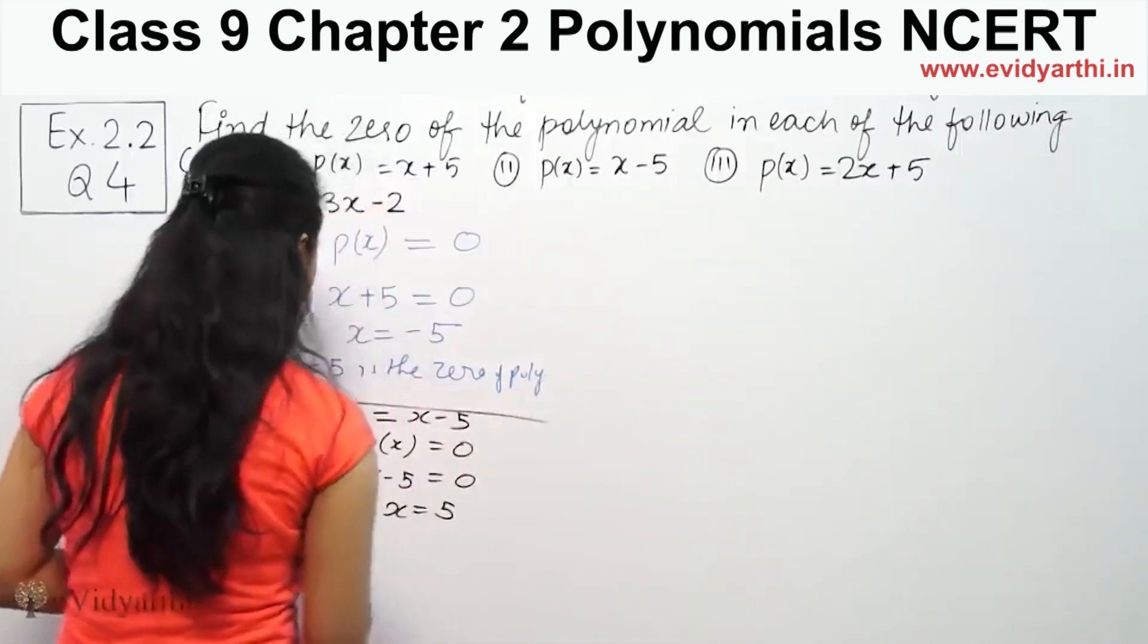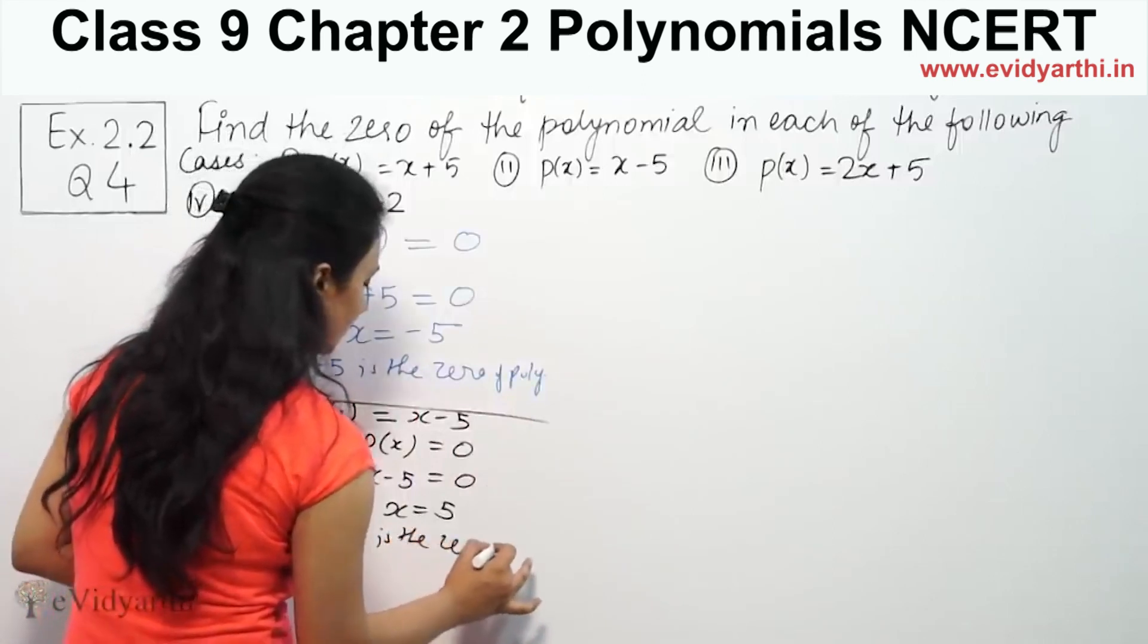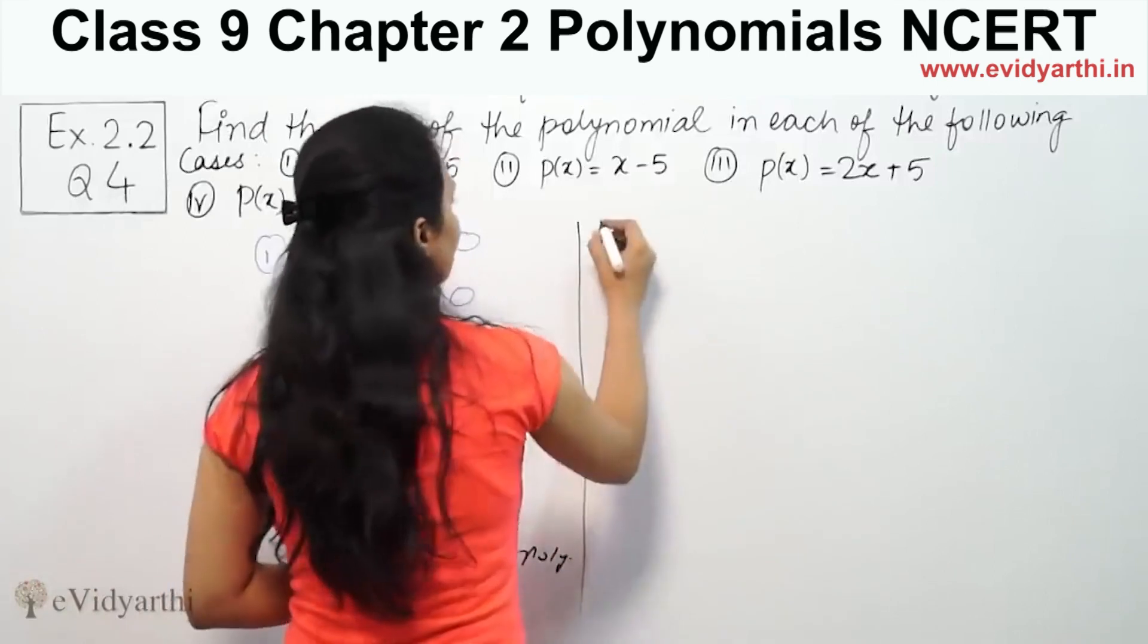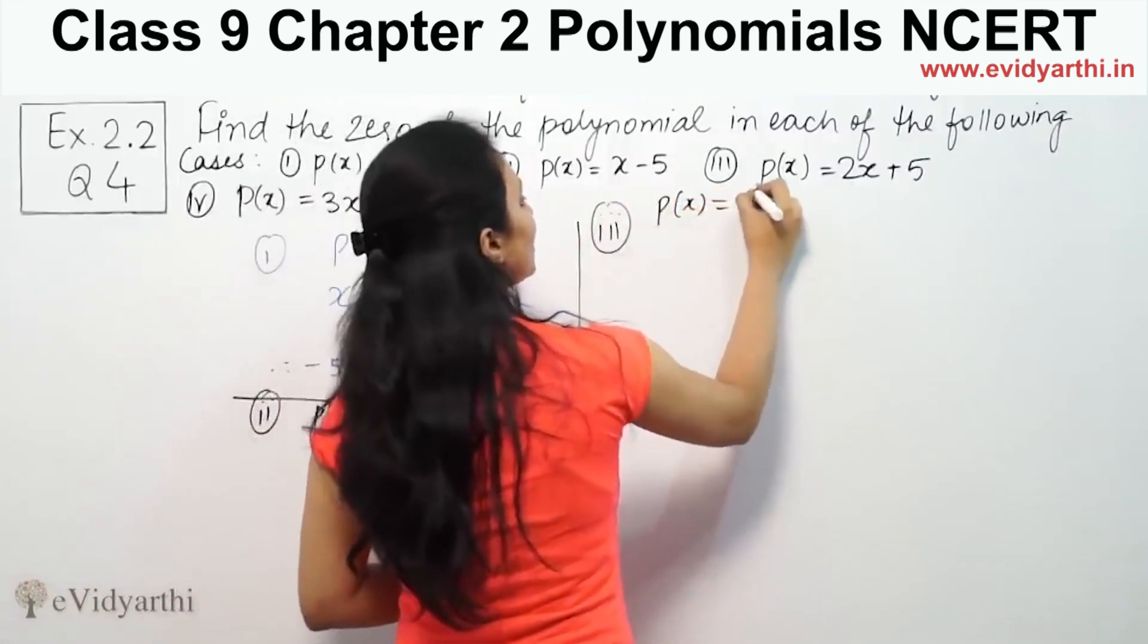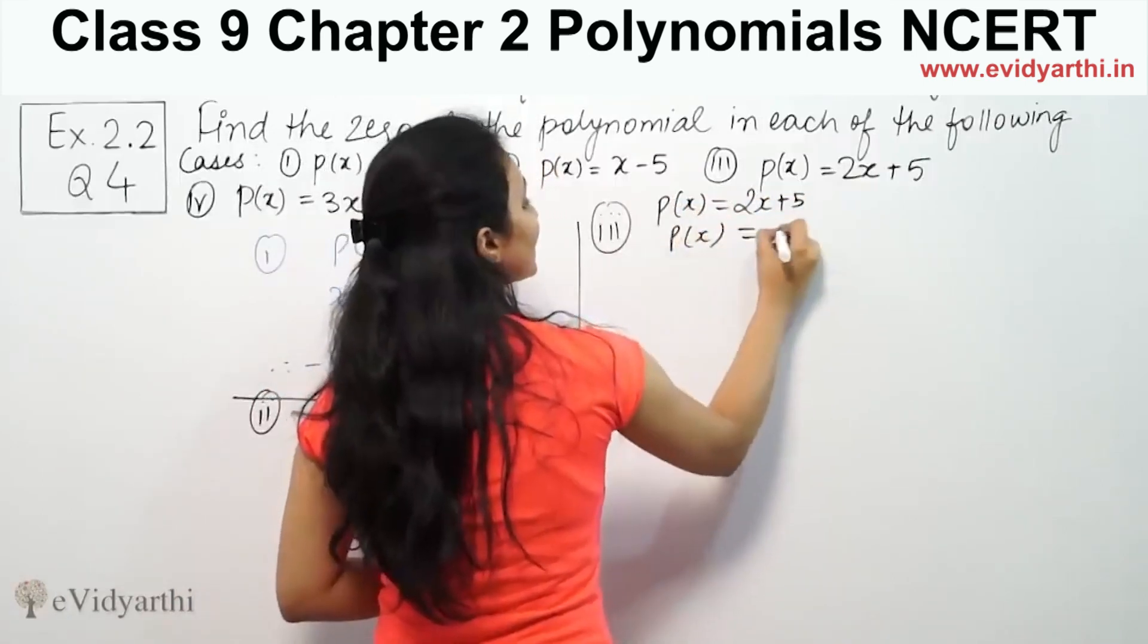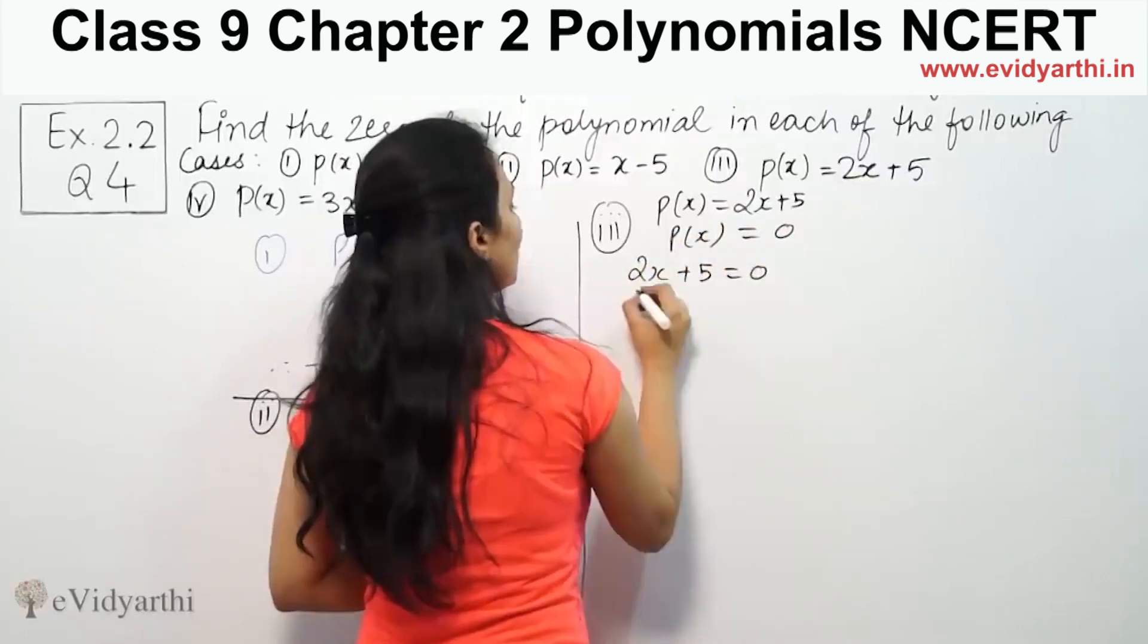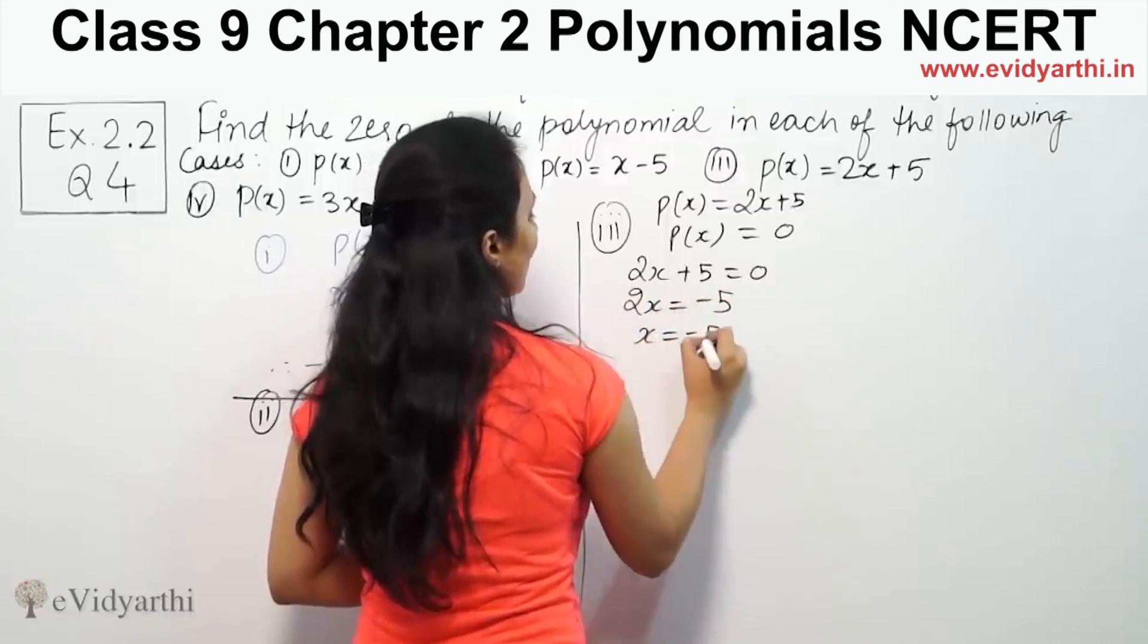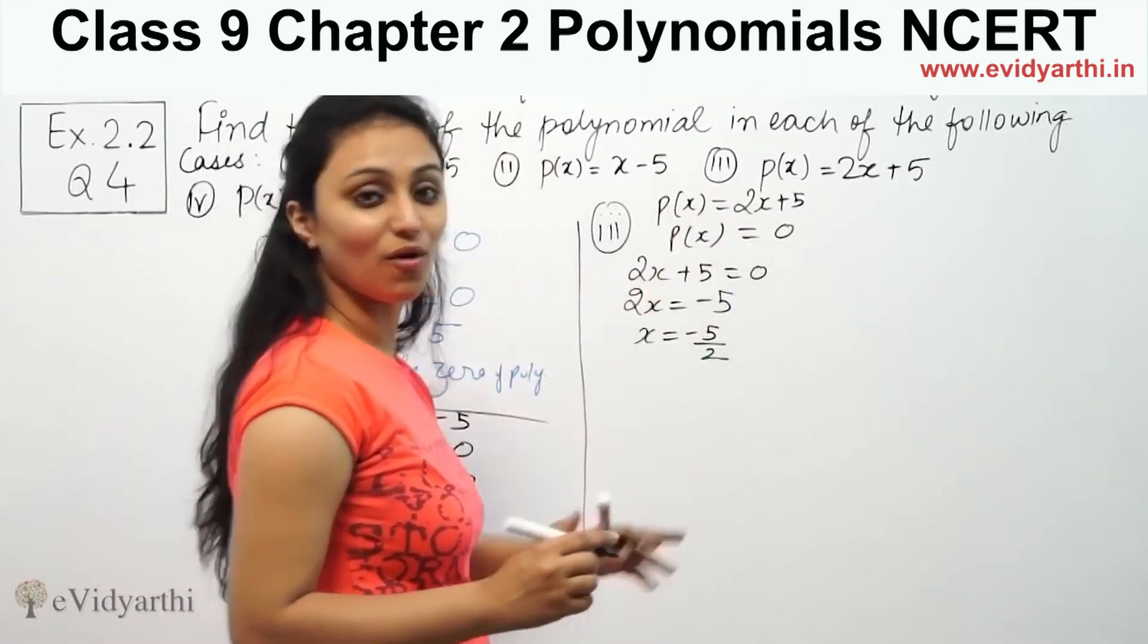That means five is the zero of the polynomial. Third part, p(x) = 2x + 5. So x is minus five by two. So minus five by two is the zero of this polynomial.